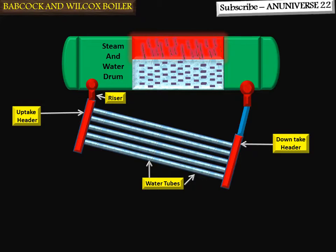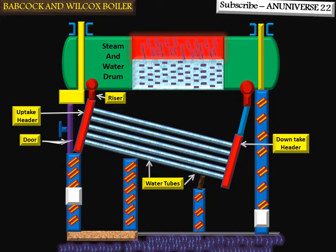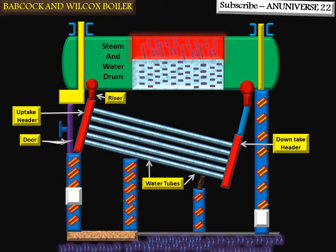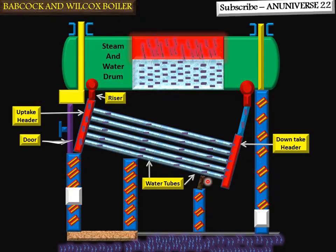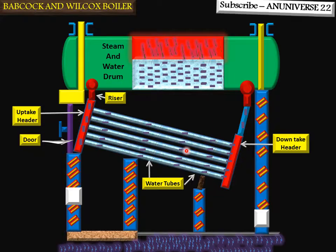Water flows from the drum to the tubes through the downtake header. Steam flows from the water tubes to the drum via the uptake header. At the same time, water flows from the drum to the water tubes through the downtake header, which maintains the flow of water. Here we can see water flows from the drum to the water tubes through the downtake header, and steam is produced and passes through the uptake header. These are the wall breeze deflectors.